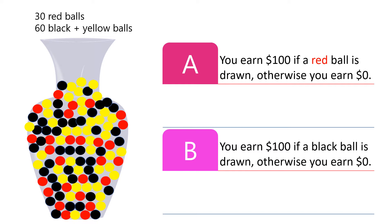In Option B, you earn $100 if a black ball is drawn, otherwise you earn $0. The probability is unknown because you don't know the proportion of black balls in the urn. To select from the two options, you are making a choice between an outcome with a known probability and an outcome with an unknown probability. Under these circumstances, if your choice is A, you are like most people who are averse to ambiguity.